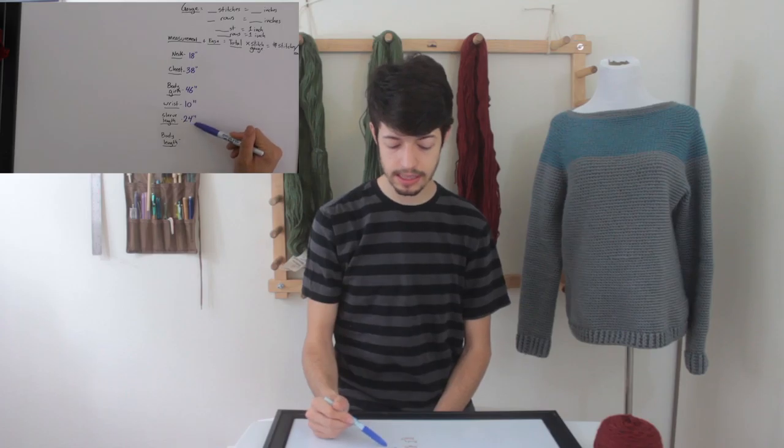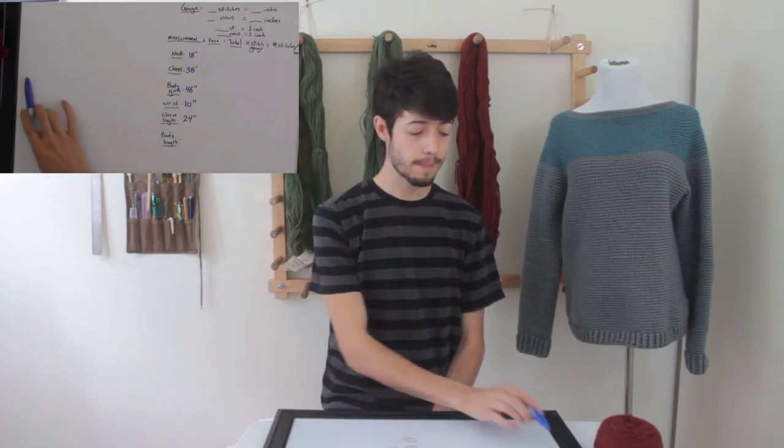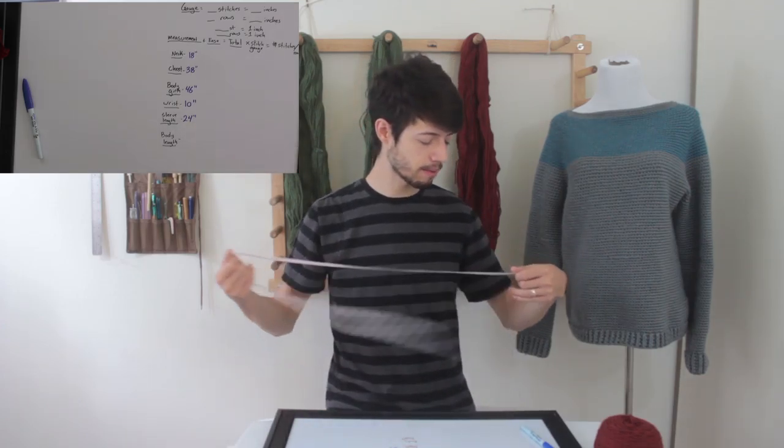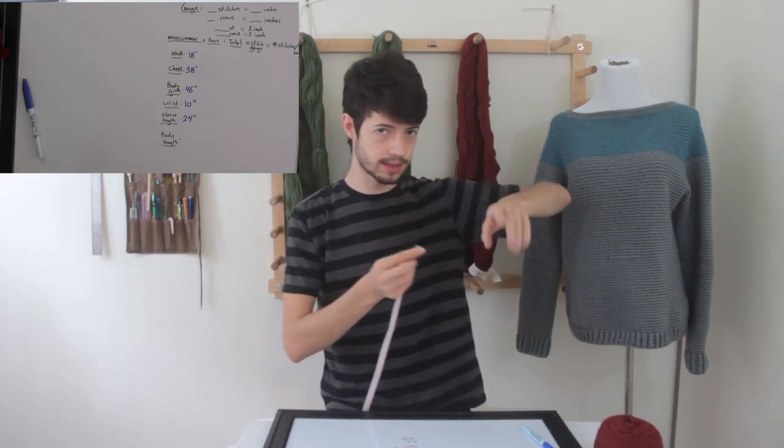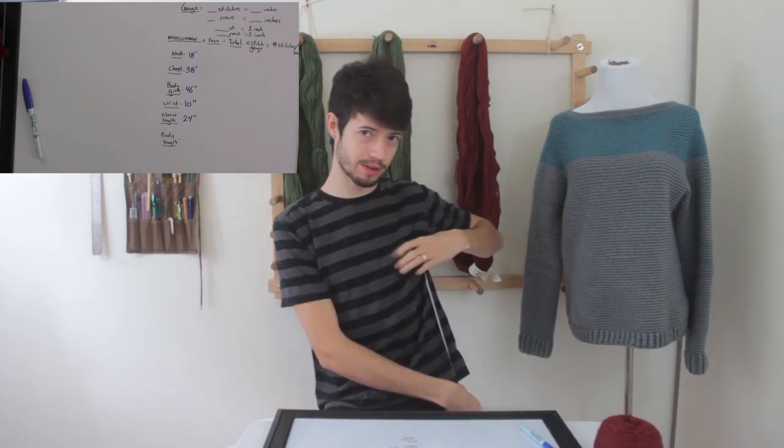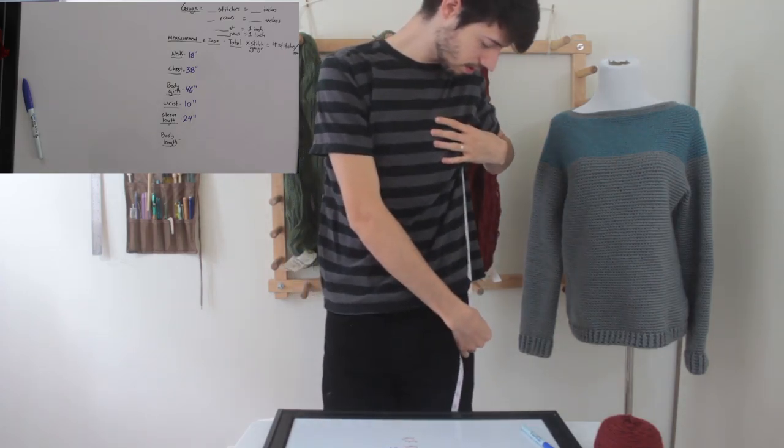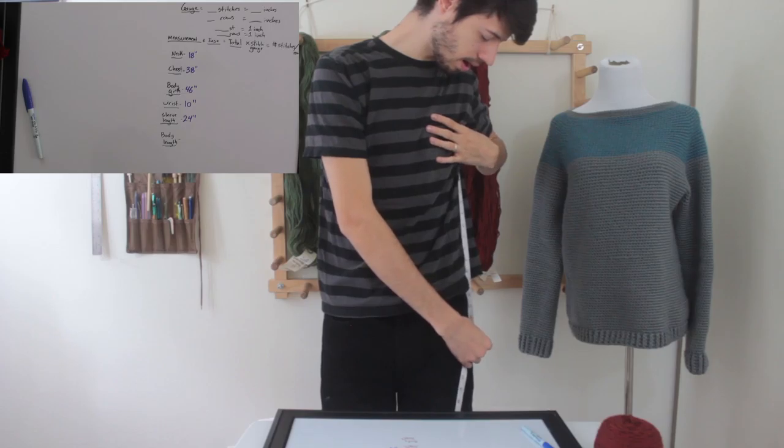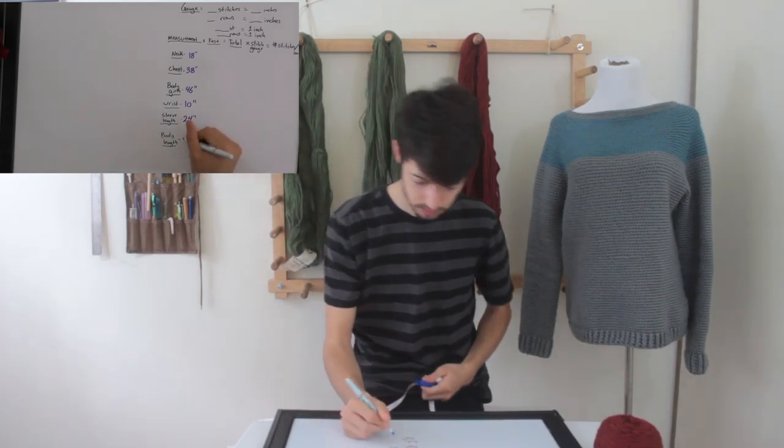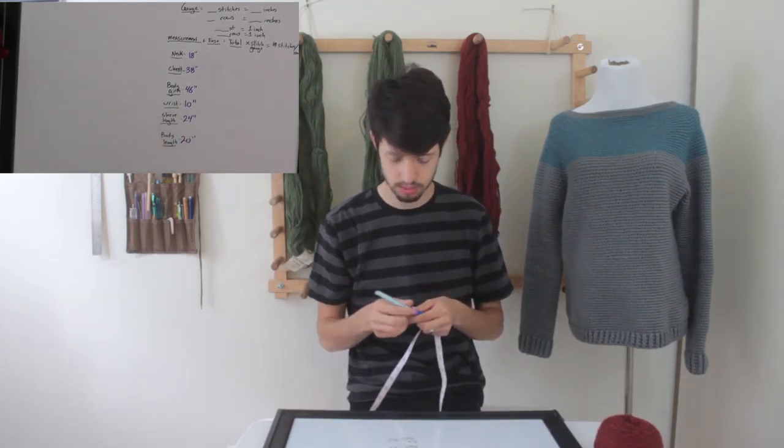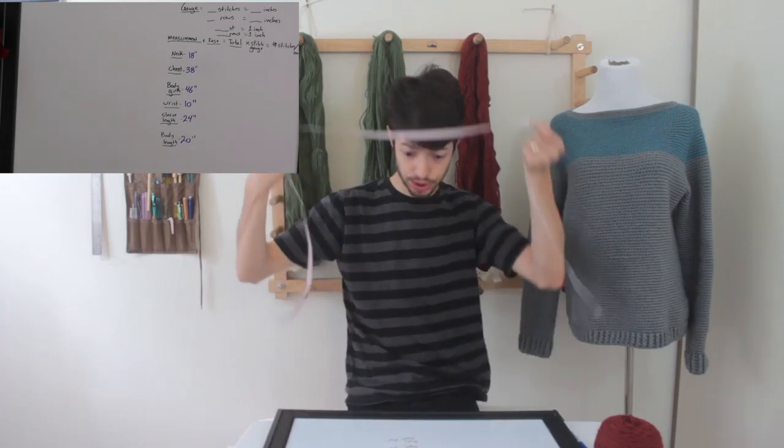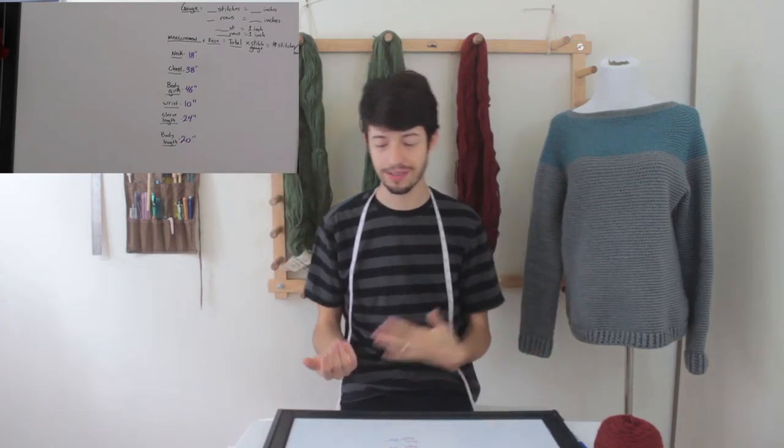For many people, the sleeve length will be the same as the body length. My arms are much longer than my torso. So it actually ends up being that my sleeve length is longer than my body length. I am going to do the same measurement from the armpit down. I like my sweaters a little bit longer. So I'm going to get a measurement of about 20 inches. I don't like it when my sweater is right up on me and I get that kind of cold draft in the back. So I like to make sure that I have plenty of length in both my sleeves and my body.